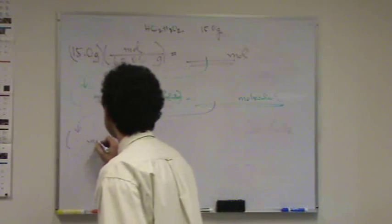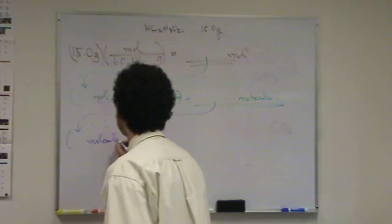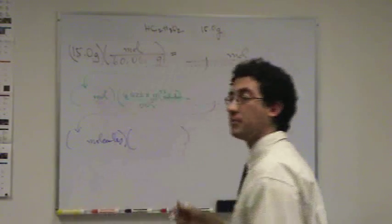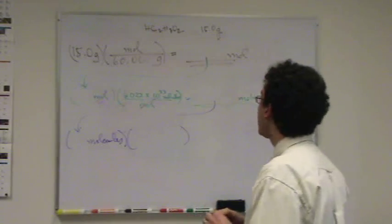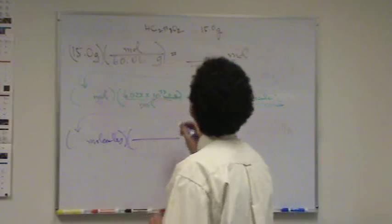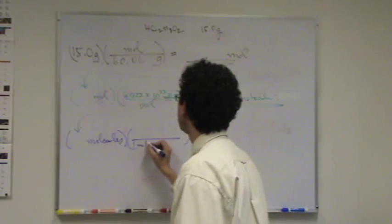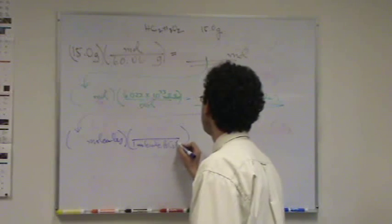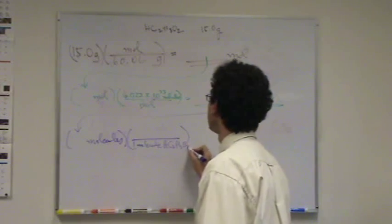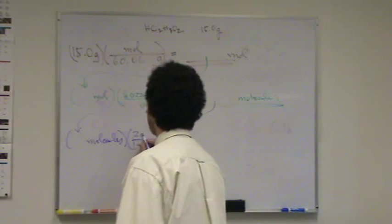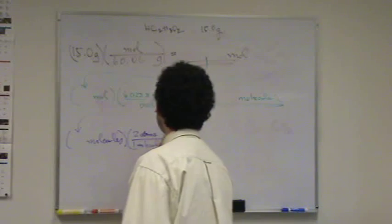That number of molecules, it's a big number, huge. And I say, well, for every one molecule of acetic acid, HC2H3O2, for every one of those, I have two atoms of oxygen.